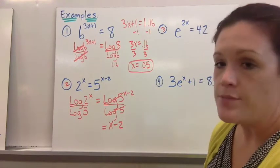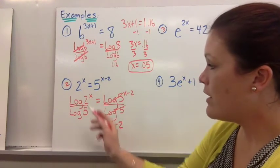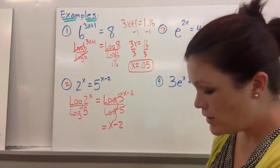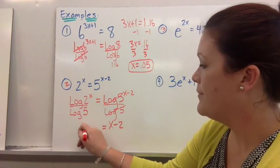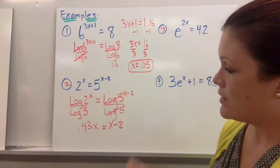That comes out of the exponent now and then in my calculator I've already typed this part in. So log of 2 divided by log of 5 is 0.43 and then the x is still there.